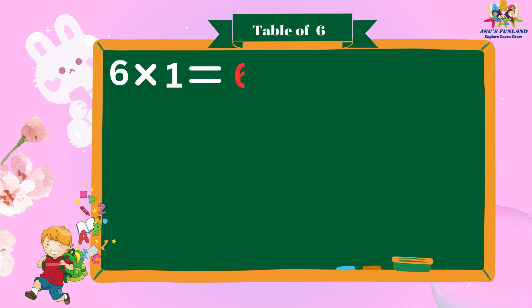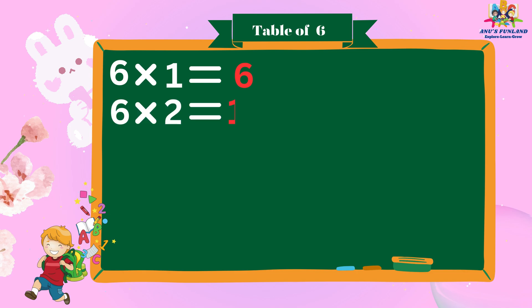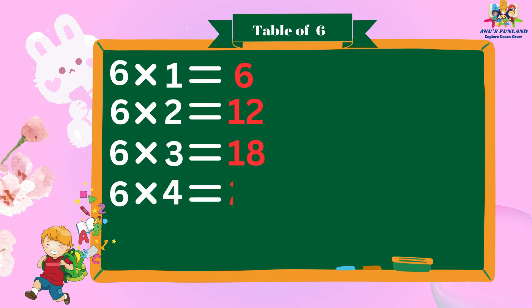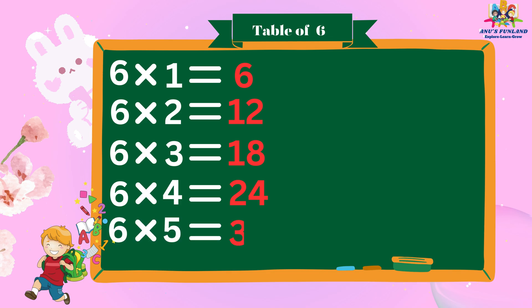Six ones are six. Six twos are twelve. Six threes are eighteen. Six fours are twenty-four. Six fives are thirty.